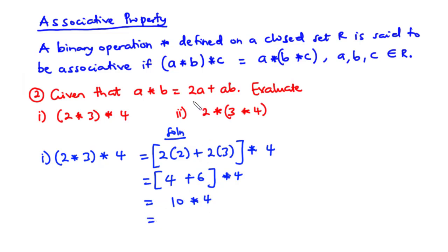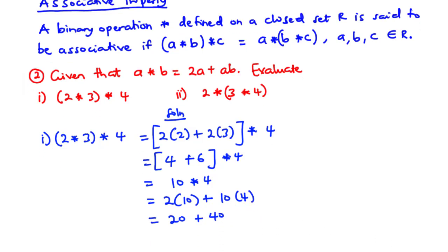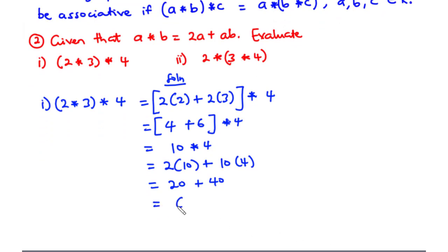We apply the same rule A star B equals 2A plus AB to solve 10 star 4. So this time A is 10 and B is 4. So we have 2 times 10 plus 10 times 4. 2 times 10 is 20, and 10 times 4 is 40. So 20 plus 40 is 60. Therefore (2 star 3) star 4 equals 60.